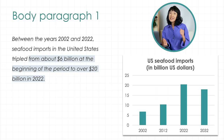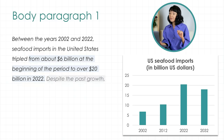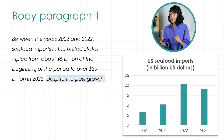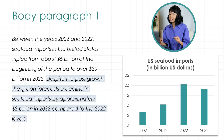Indeed, you'll be penalized for giving too many details or too many numbers — you must be strategic. 'From about $6 billion at the beginning of the period to over $20 billion in 2022.' The phrase 'despite the past growth' links my sentences and tells the examiner that something different is coming next — that's great for your cohesion. 'Despite the past growth, the graph forecasts a decline in seafood imports by approximately $2 billion in 2032 compared to the 2022 levels.'